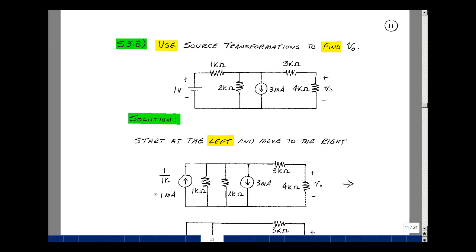This lesson deals with supplemental problem 3.8. You can find this problem in the course ebook in the Chapter 3 Supplemental Problems on page 11. Given this circuit, could you use source transformations to solve for Vout?